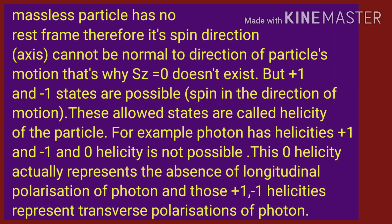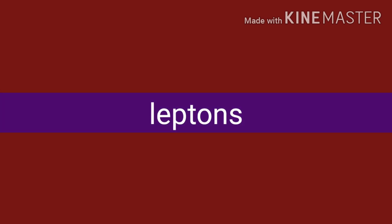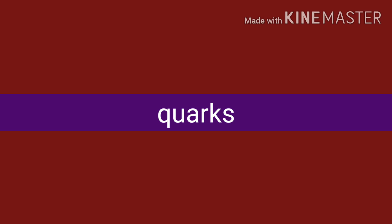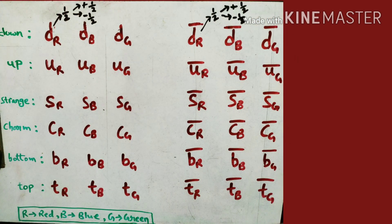Let's apply this knowledge to our fundamental particles. Leptons have spin-1/2, meaning each lepton — whether particle or antiparticle — can have two orientations: plus-1/2 or minus-1/2. Similarly, quarks have spin-1/2, so all 36 quarks, regardless of whether they are particles or antiparticles, have the possibility of being in either the plus-1/2 or minus-1/2 state.